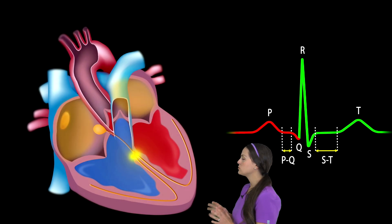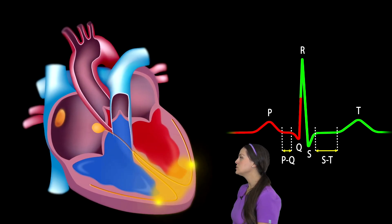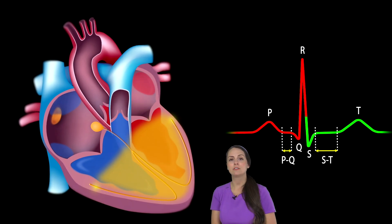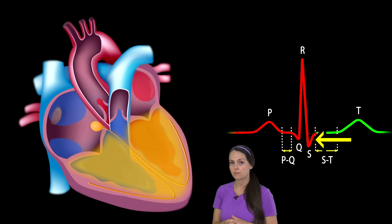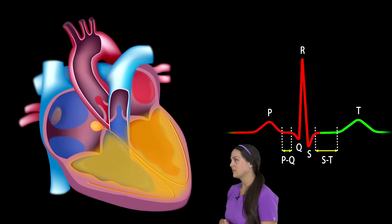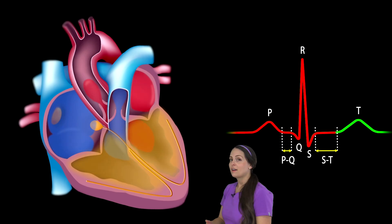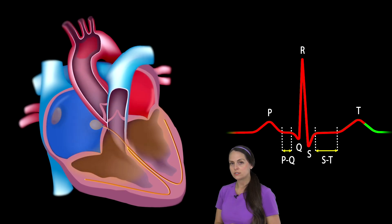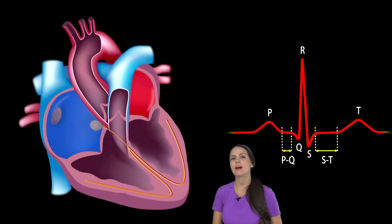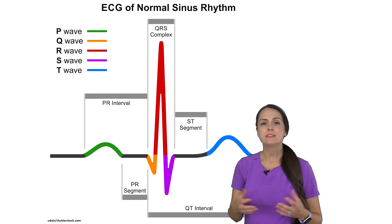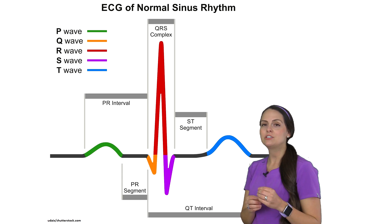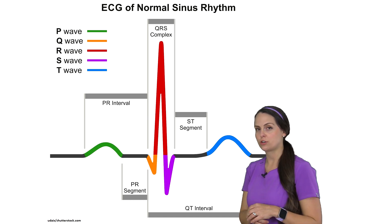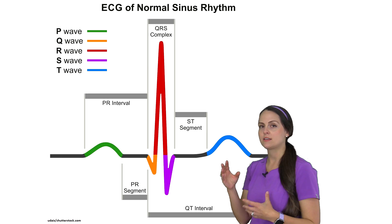Electrical signals then travel down through the right and left bundle branches and to the Purkinje fibers, resulting in ventricular depolarization and contraction of the ventricles. Whenever the ventricles contract, they create the QRS complex, representing ventricular depolarization. After that, since they've contracted, they need to rest — ventricular repolarization occurs and the ventricles, being so large, create the T wave when they relax. This process then repeats itself over and over again. What you want to take away is how that ECG waveform should look and what certain parts should measure, because we need that information when analyzing abnormal rhythms.